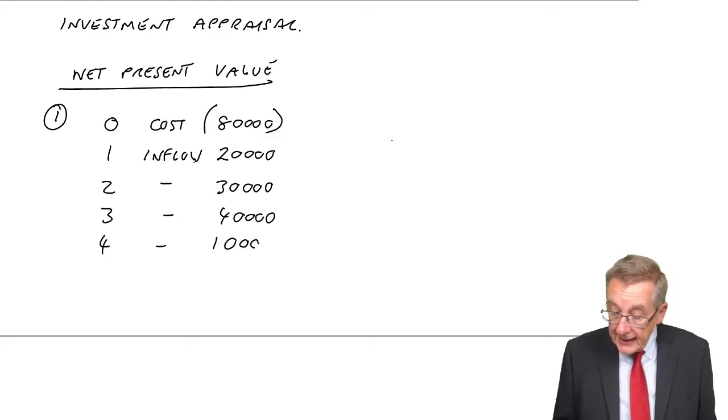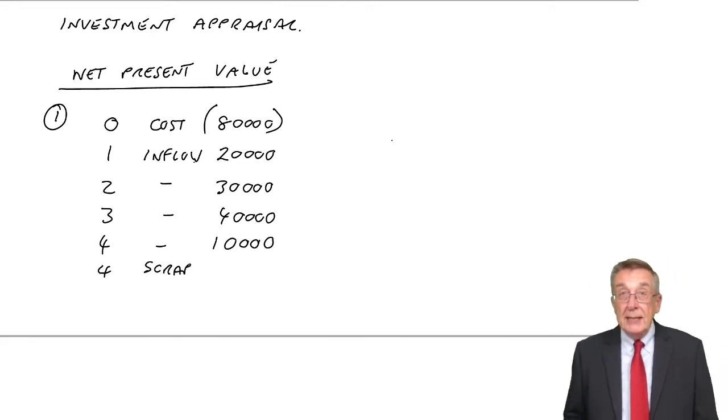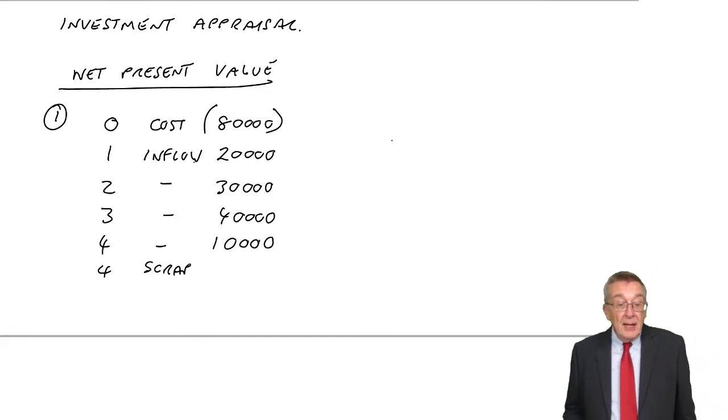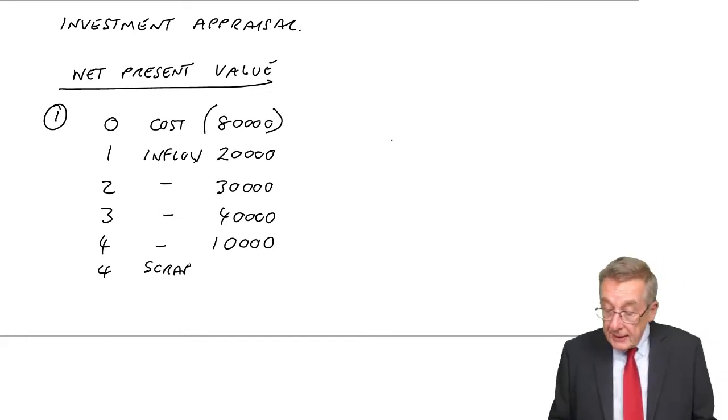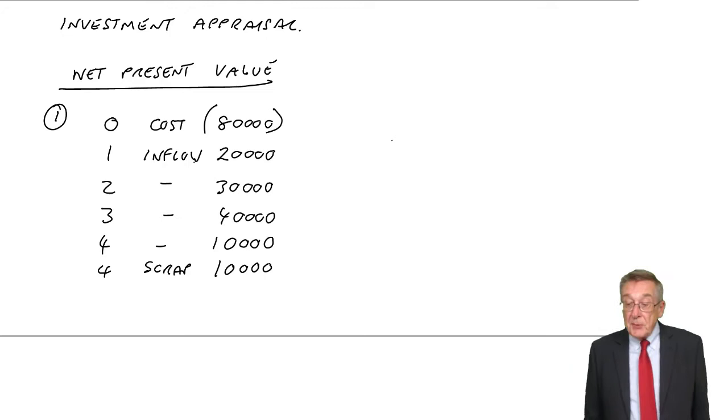Four years' time, another £10,000. But also, remember, in four years' time, we'll scrap the machine, we'll sell it. He says at the end of the four years, we expect to sell it for £10,000. And so those are the cash flows you're expecting. Pay out £80,000, get back £20,000, £30,000, £40,000, £10,000.